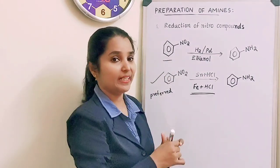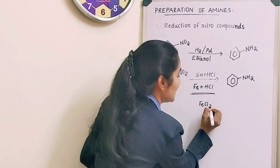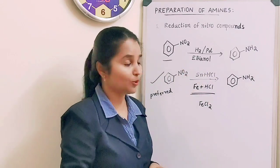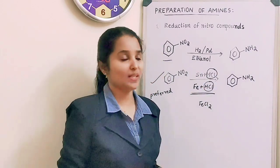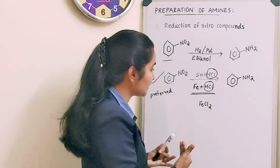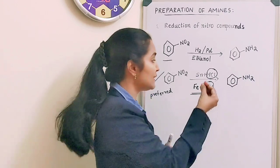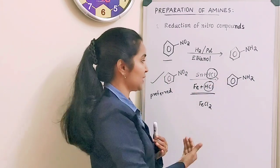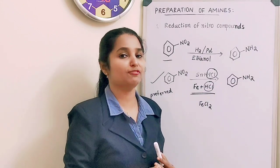Why is the second method preferred? When iron scrap reacts with hydrochloric acid, FeCl₂ is formed. The formed FeCl₂ hydrolyzes itself to give back HCl. So only a little amount of HCl is needed to initiate the reaction — once started, the reaction medium itself produces HCl. With very less amount of reactants, we can produce amine. That is why the second method is preferred.